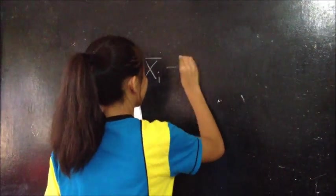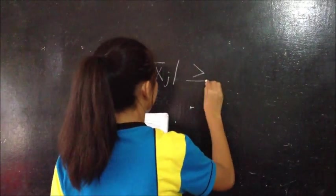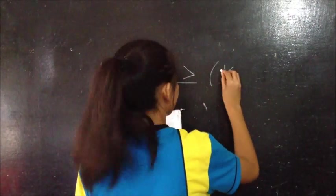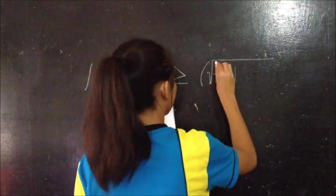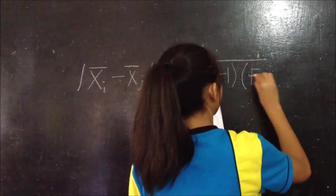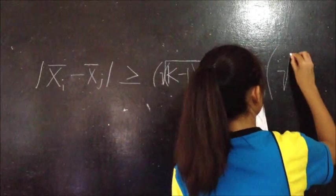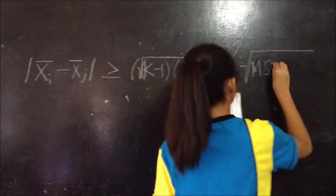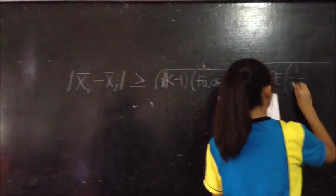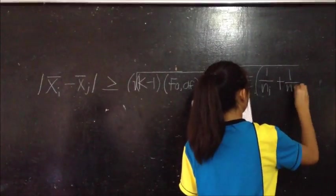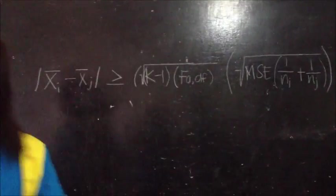The formula is: the absolute value of means sub I minus means sub J is greater than or equal to the product of square root of K minus 1 multiplied to the DF and the square root of MSE multiplied to the sum of 1 over N sub I plus 1 over N sub J.